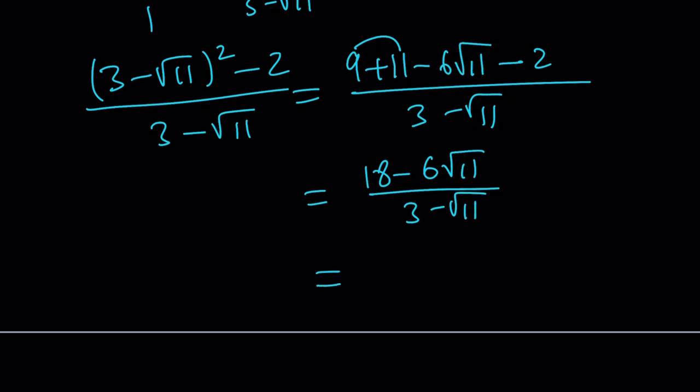And as before, we can take out a 6 and write this as 3 minus root 11 times 6 divided by 3 minus root 11. 3 minus root 11, again, does not equal 0 because root 11 does not equal 3.